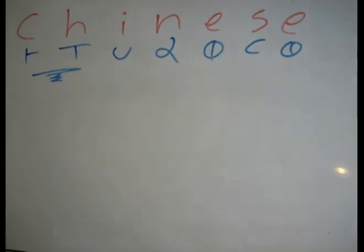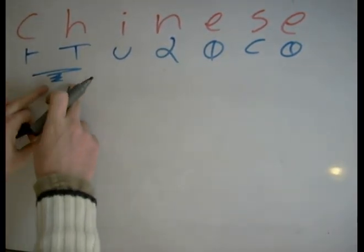In this video, we're going to be doing the word Chinese. Well, the first thing we'll look at is a very common double combination, CH.